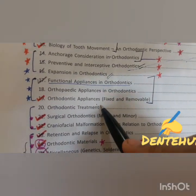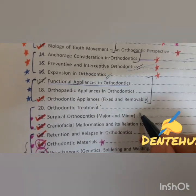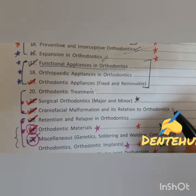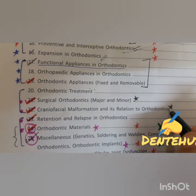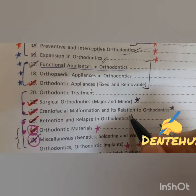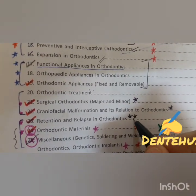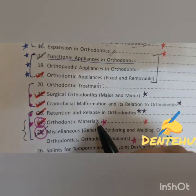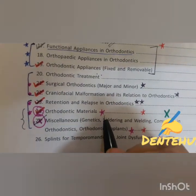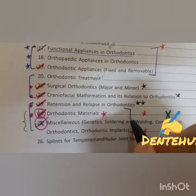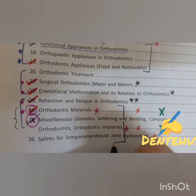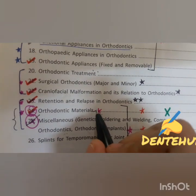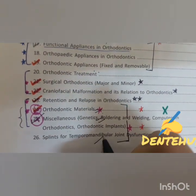Orthodontic treatment is covered next. Another very important topic is surgical orthodontics, craniofacial malformation, and retention and relapse — I am marking two stars on these. Orthodontic materials and miscellaneous ones like splints are important from a dental materials point of view. In the past few years, a few dental material questions have come from this section.